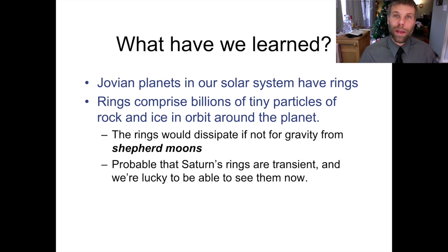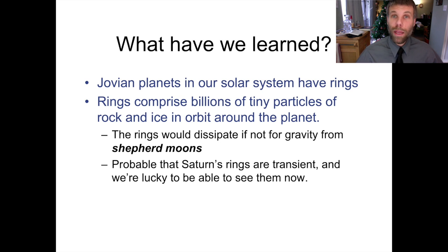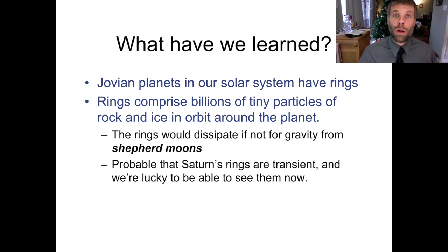In this video, we've talked about planetary ring systems. It turns out that all four of the Jovian planets in our solar system have rings. We think that rings are formed when a moon wanders too close to its parent planet and gets shredded by the tidal forces from the parent planet's gravity. The material from that moon then turns into a ring system, but the ring systems are transient — they don't stick around forever. They require shepherd moons to help maintain order and keep the ring structure intact. So we're probably quite lucky to be able to observe Saturn's spectacular ring system. Chances are it's going to dissipate in a few hundred thousand years, and we've just been lucky enough to observe Saturn right now when there is a very spectacular ring system available for viewing. Thanks for watching, and I hope to talk to you again soon for another Topic in Astronomy.